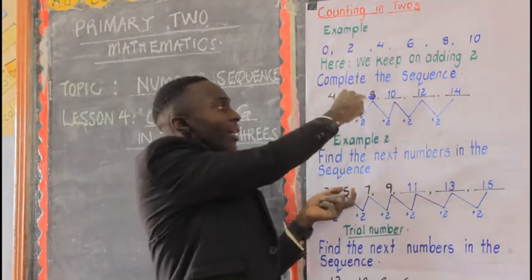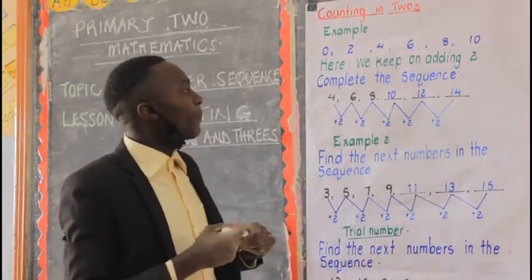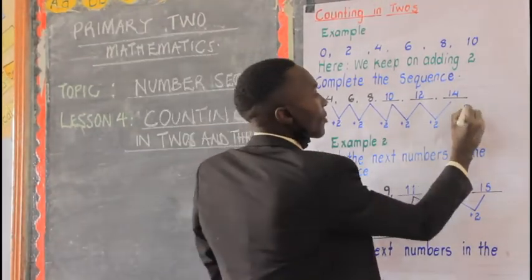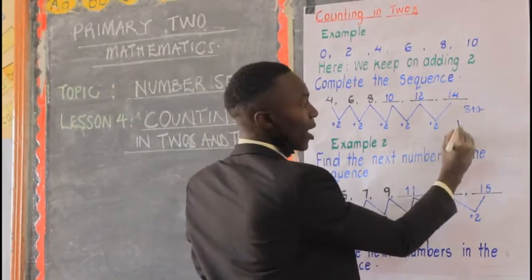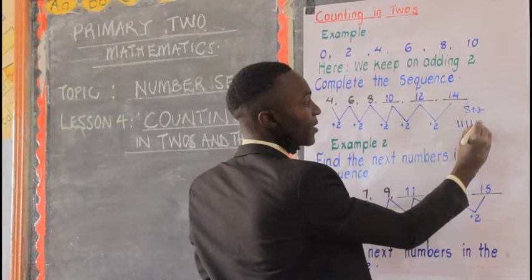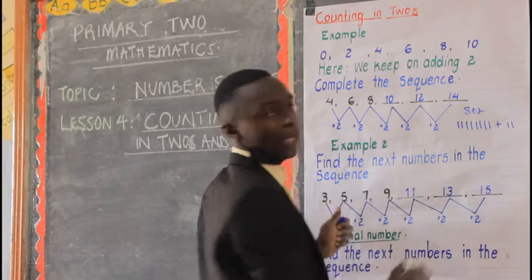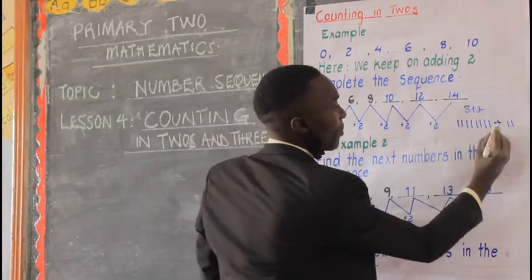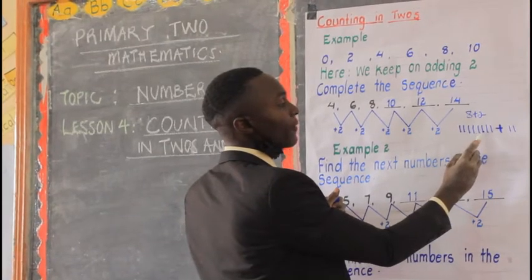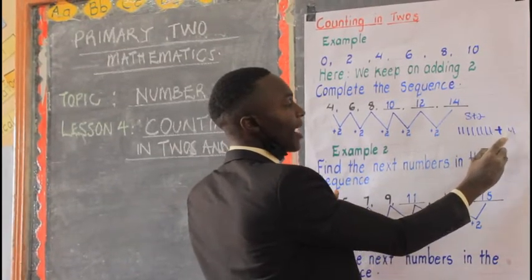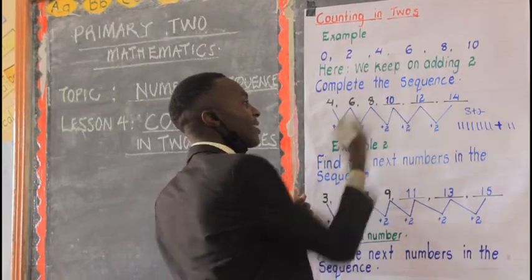We say eight, and we add two because we have been adding two throughout the sequence. Eight plus two — you count on: nine, ten. You get ten. Write your ten here. That is our ten.